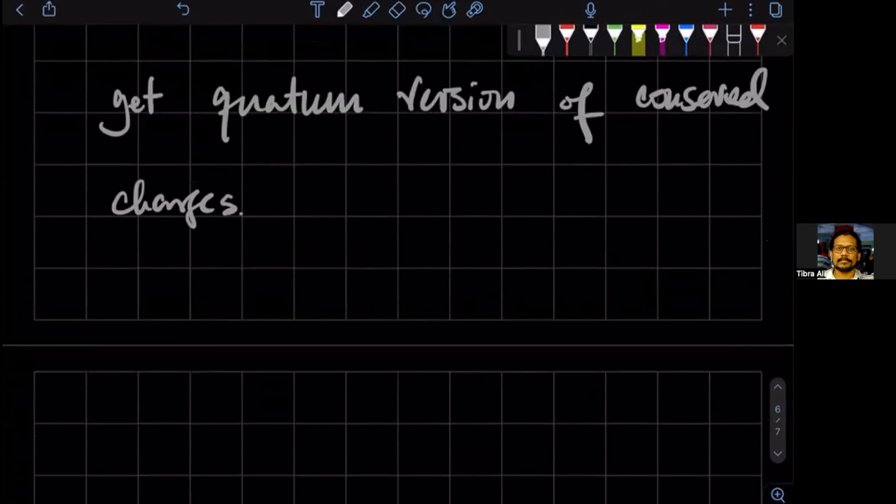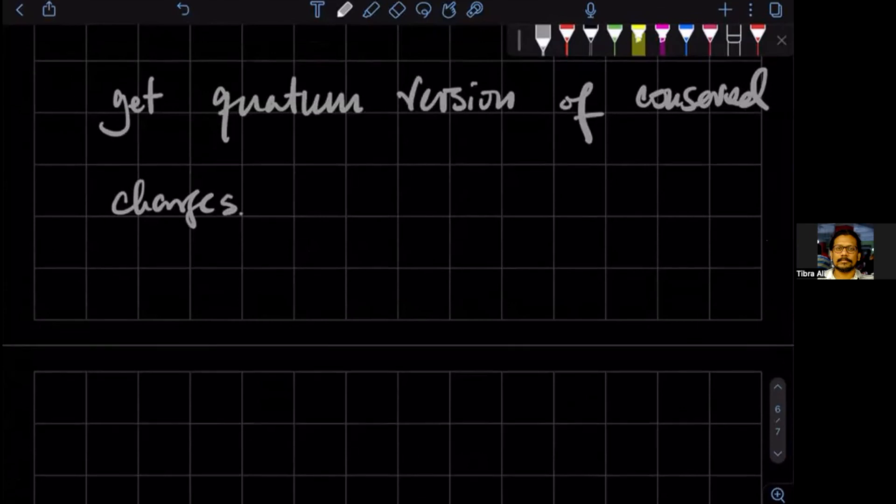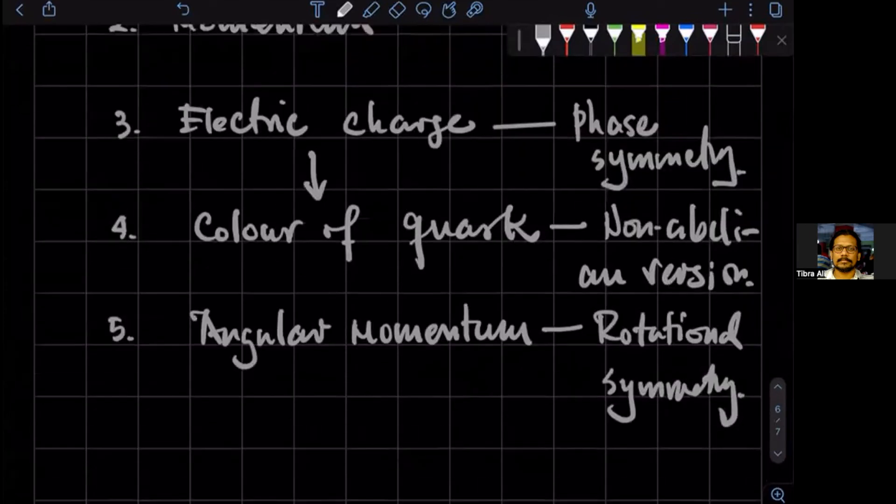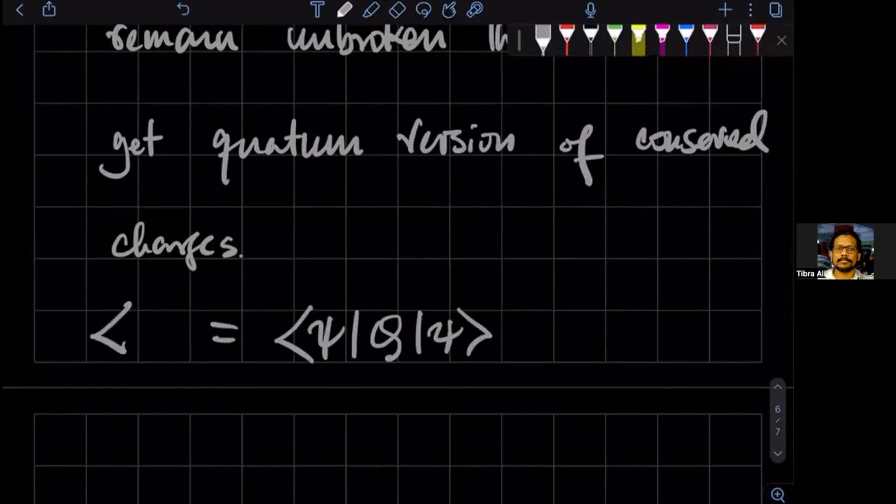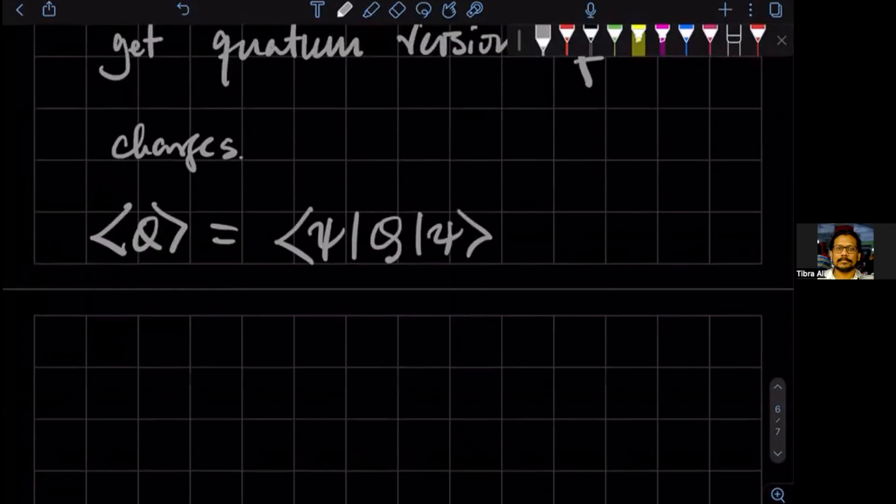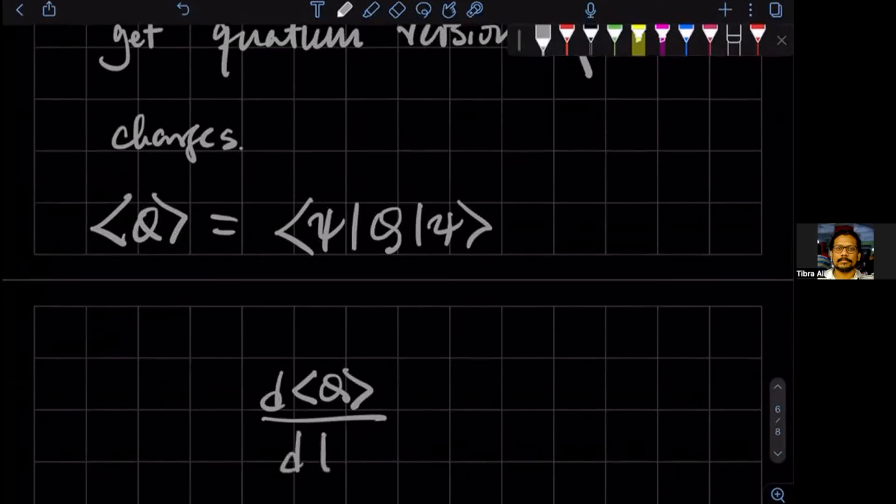So what does that mean? Means that for every observable that is like, these are called charges, we have some Hermitian operator Q. And that Hermitian operator in some state of our quantum theory has some expectation value, say Q. Then in quantum mechanics, Noether's theorem tells us that if this was a symmetry, if this charge was a result of a symmetry, then that would not change with time.